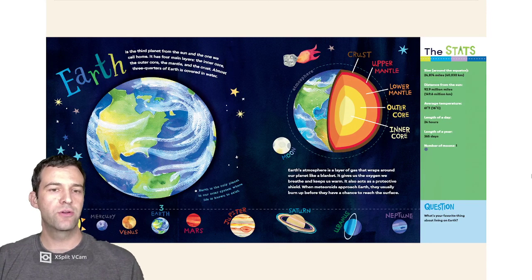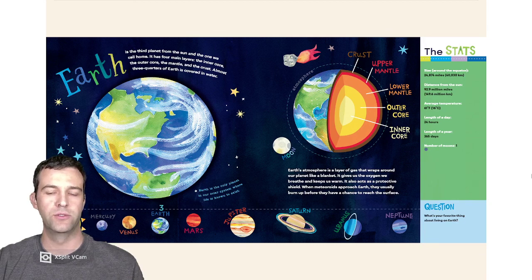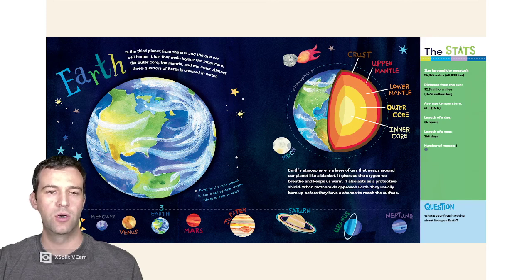Earth is the third planet from the Sun and the one we call home. It has four main layers: the inner core, the outer core, the mantle, and the crust. Almost three-quarters of Earth is covered in water.